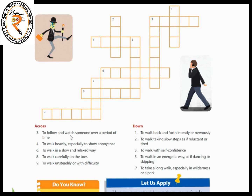To follow and watch someone over a period of time — the word for the third one is swagger: S-W-A-G-G-E-R. Swagger. You can get the help of a dictionary to find these words.